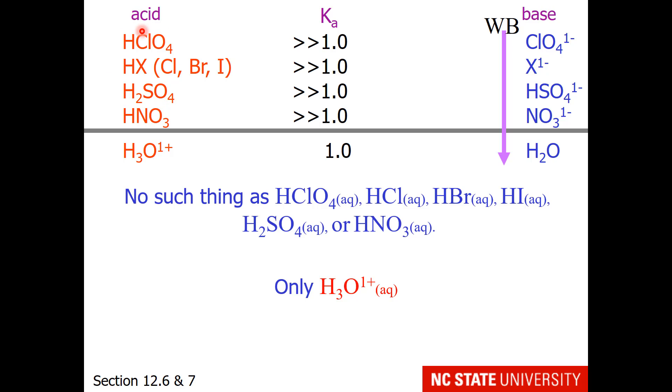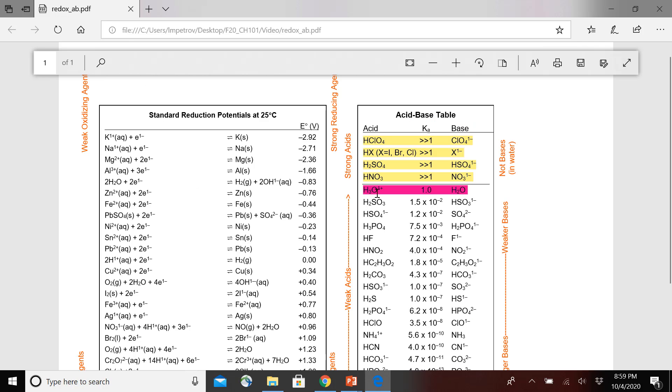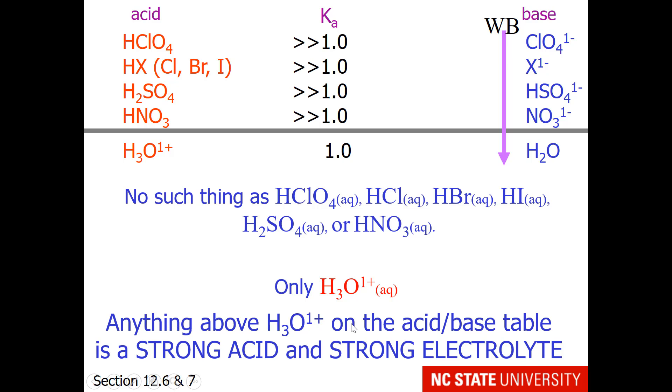Well, now you don't have to. Because they will be on the acid base table that you will be using for your homework and your tests. Here is a quick peek at that table. And you can see that the 6 strong acids are here on the upper left of the acid base table. I have this area labeled strong acids. And there is a line right here showing you that hydronium is the strongest acid that can exist in water. So anything above hydronium on the acid base table is a strong acid and a strong electrolyte.